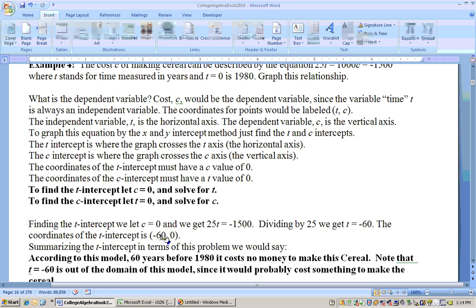T is time measured in years, and back in the problem T equals zero is 1980. So since it's negative, this means 60 years before 1980. So 60 years before 1980, that'd be 1920. What was zero? The cost. The cost was the dependent variable. So 60 years before 1980, the cost to make this cereal was free.